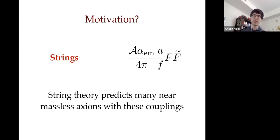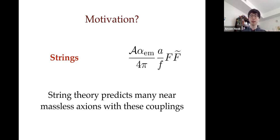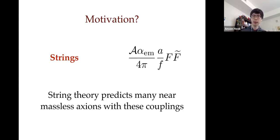Do these axion strings actually exist? From string theory, there have been many papers showing they are well motivated. Fairly generically, string theory gives you not just one of these but many, and they happen to be very light — in fact, many of the axions from string theory are lighter than the Hubble scale today, essentially massless.